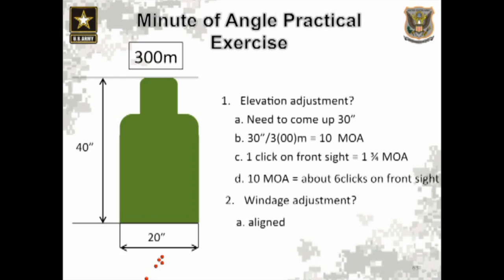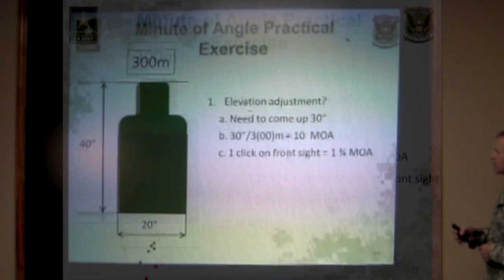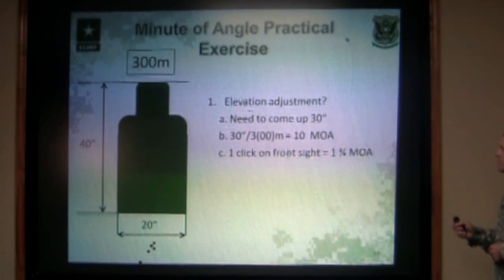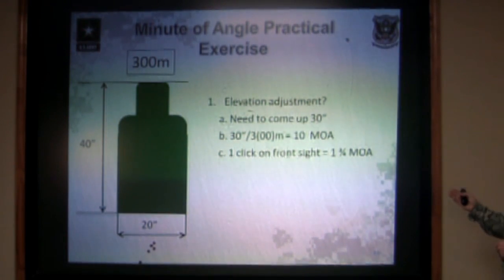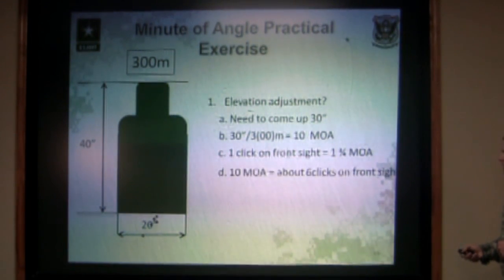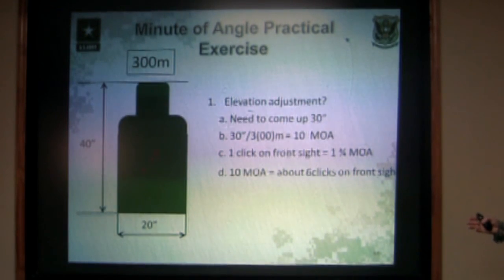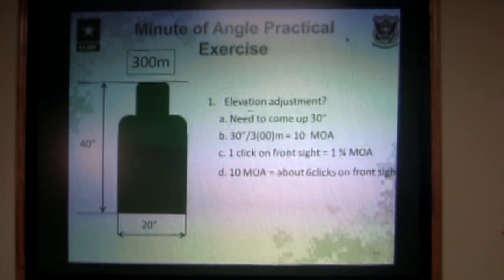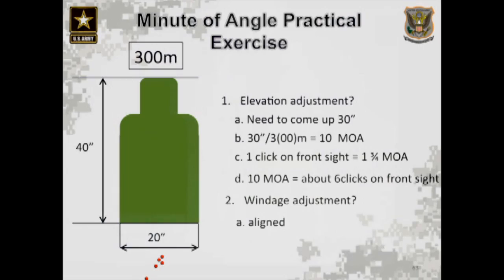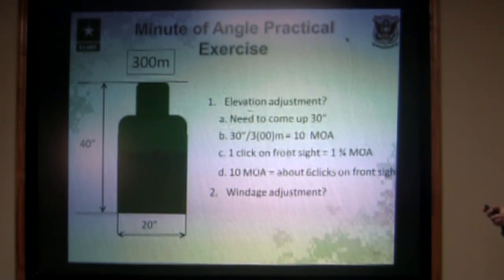We make that adjustment on the front sight. Remember, one click on the front sight post of an M4 rifle is worth one and three-quarters minutes. So to move our 10 minutes of angle up to the center of the target, we need to move about six clicks on the front sight post. The math doesn't work out perfectly, but it's going to be very close. Our group is centered left and right, so we don't need to make any windage adjustments at all.